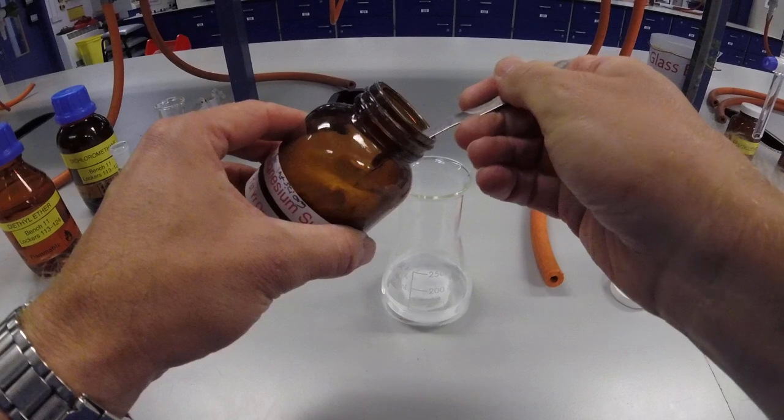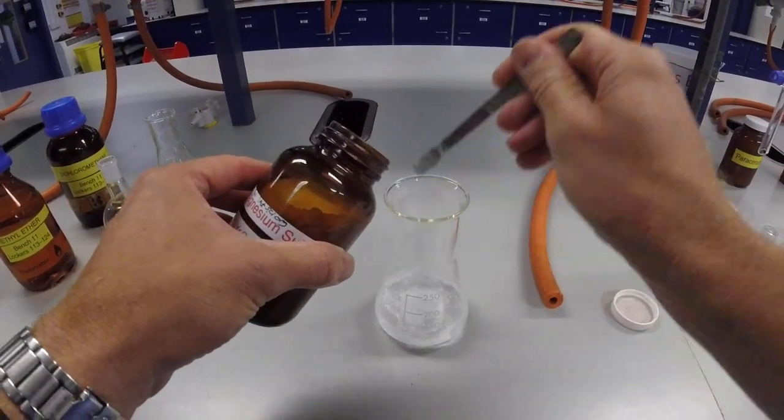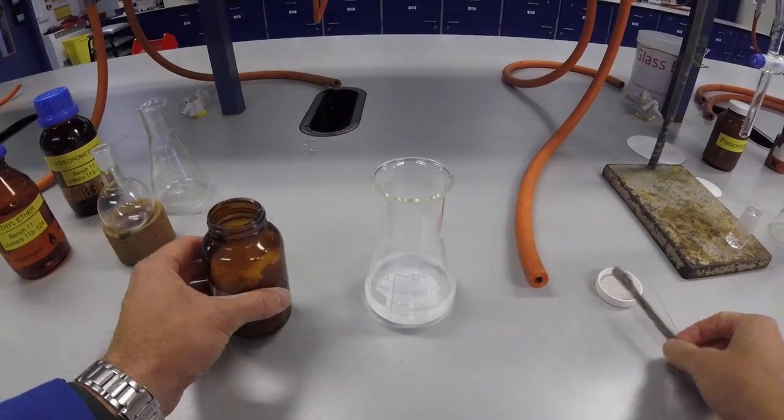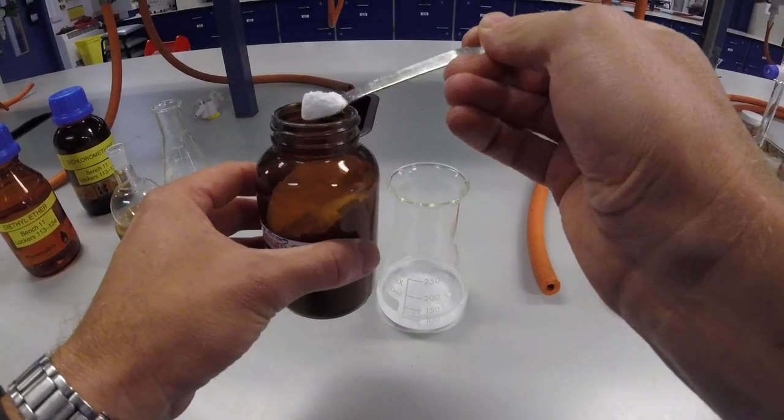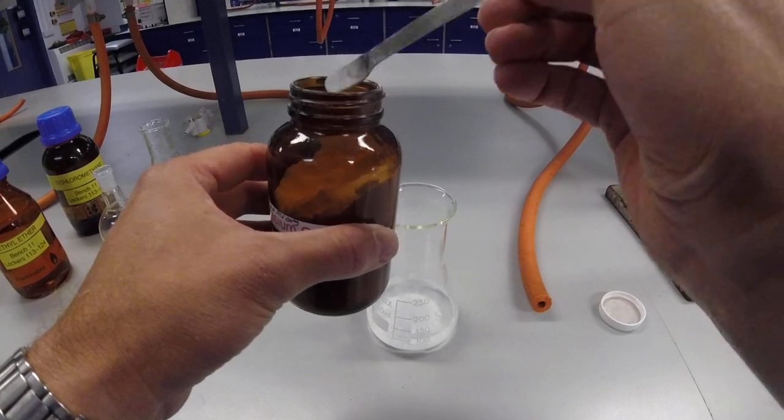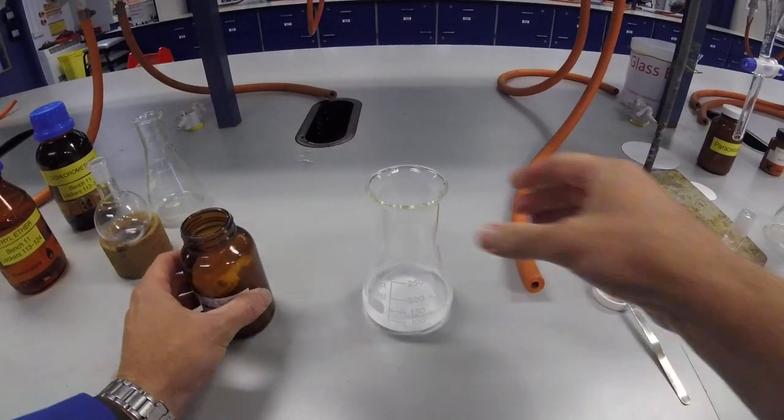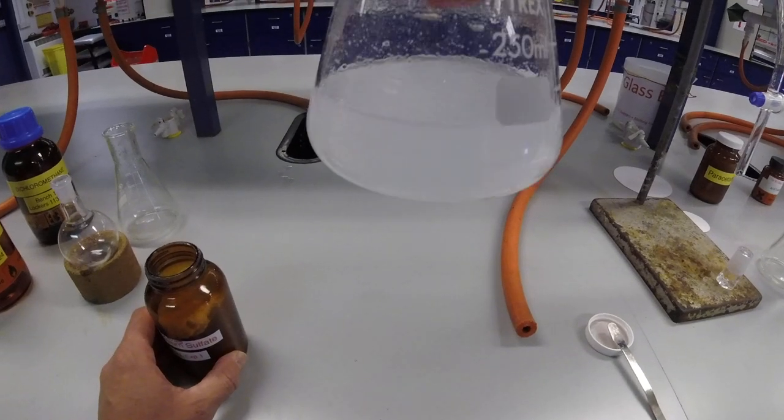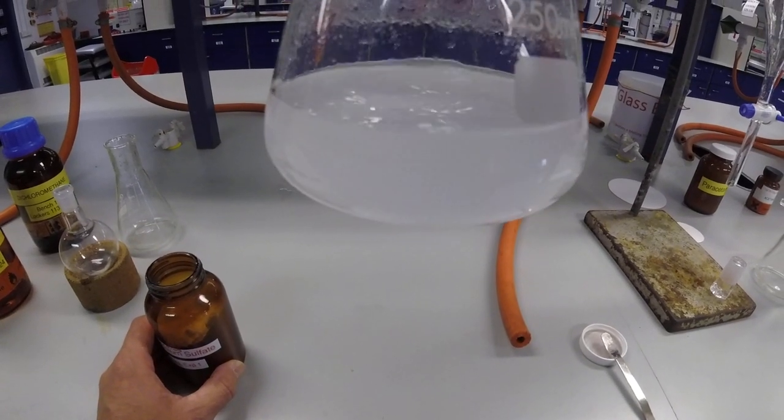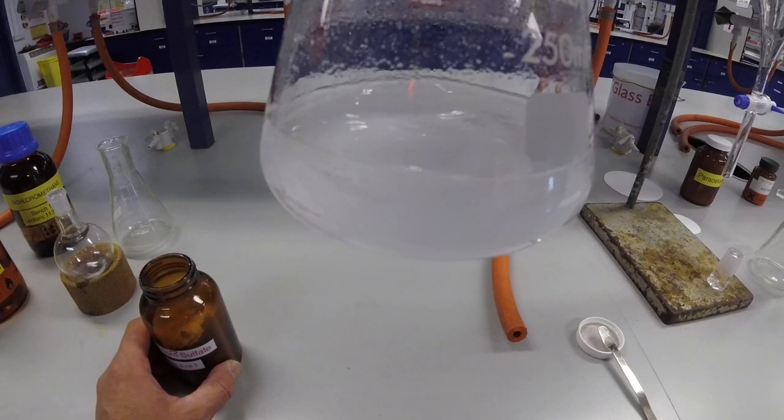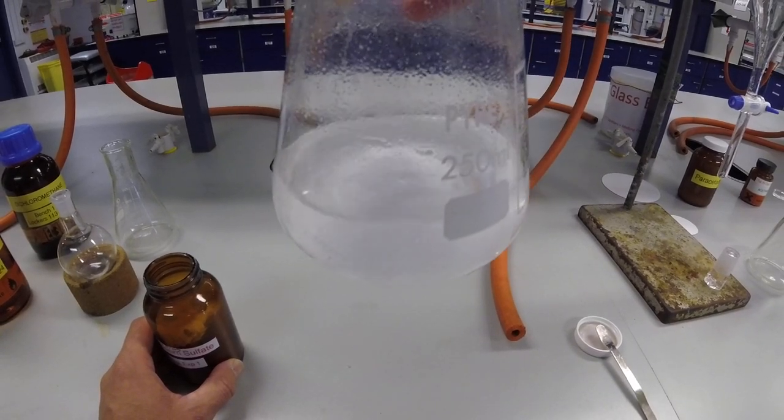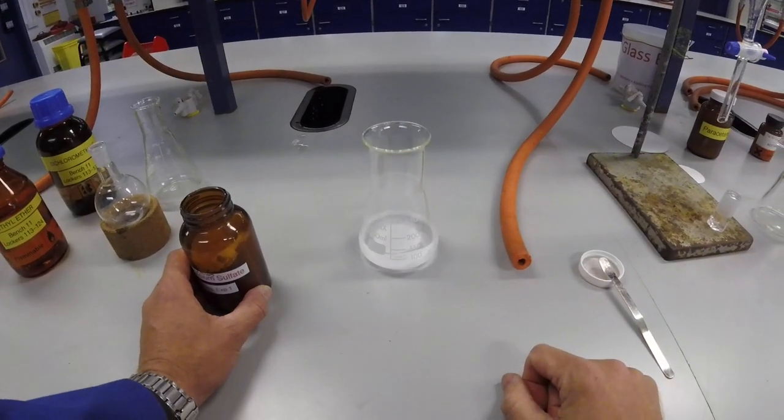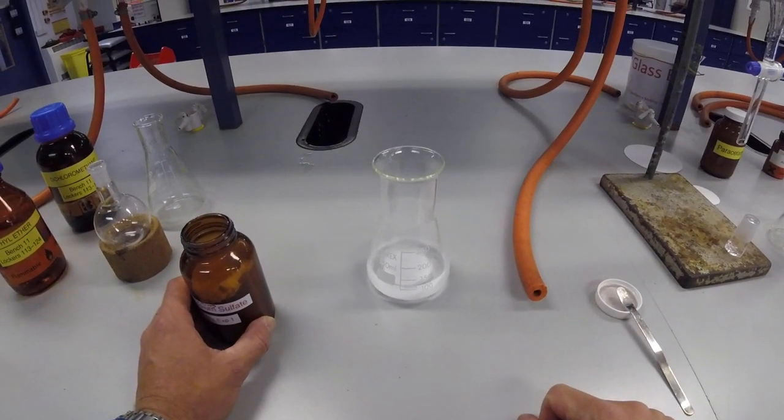Once you add enough magnesium sulfate, then the magnesium sulfate, as you can see, it's a very fine powder. And it will then swirl around a bit like, essentially, a sort of toy snow globe. Hopefully you can see that happening here. It's very, very freely flowing, and it settles slowly to the bottom. And at that point, you've dried your solvent, and you're ready to filter off and remove that magnesium sulfate.